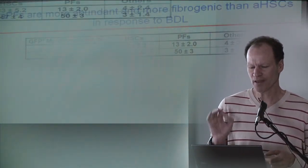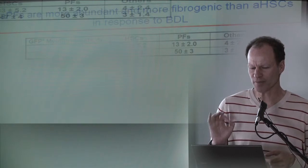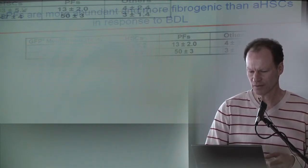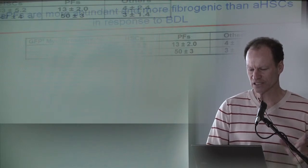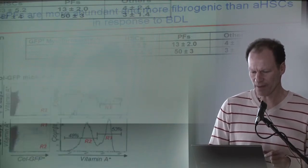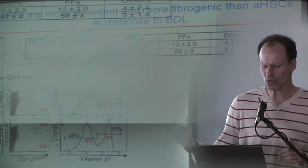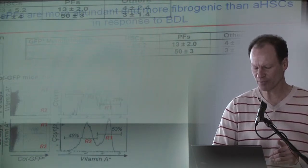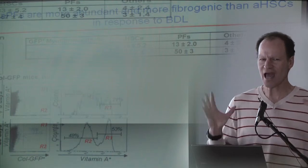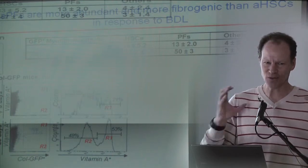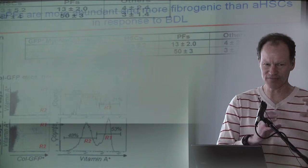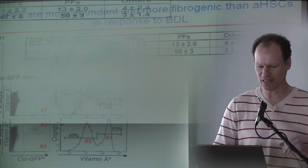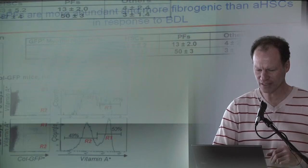Almost all the carbon tetrachloride-induced myofibroblasts are stellate cells, while in bile duct ligation, roughly half and half. But if you look early in bile duct ligation at five days, then the majority, 71%, are fibroblasts. In other words, as the injury progresses, it starts as a portal injury activating fibroblasts, and then it spreads to the liver parenchyma and activates the stellate cells. At 20 days, it's half and half.